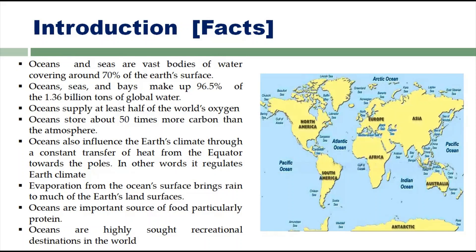Oceans are very important for the process of precipitation. They are also an important source of food, particularly protein — most of our protein-rich food comes from the oceans via marine life. Additionally, oceans are highly sought-after recreation destinations. Whenever people need relaxation or solace, they go to the oceans and find entertainment there.